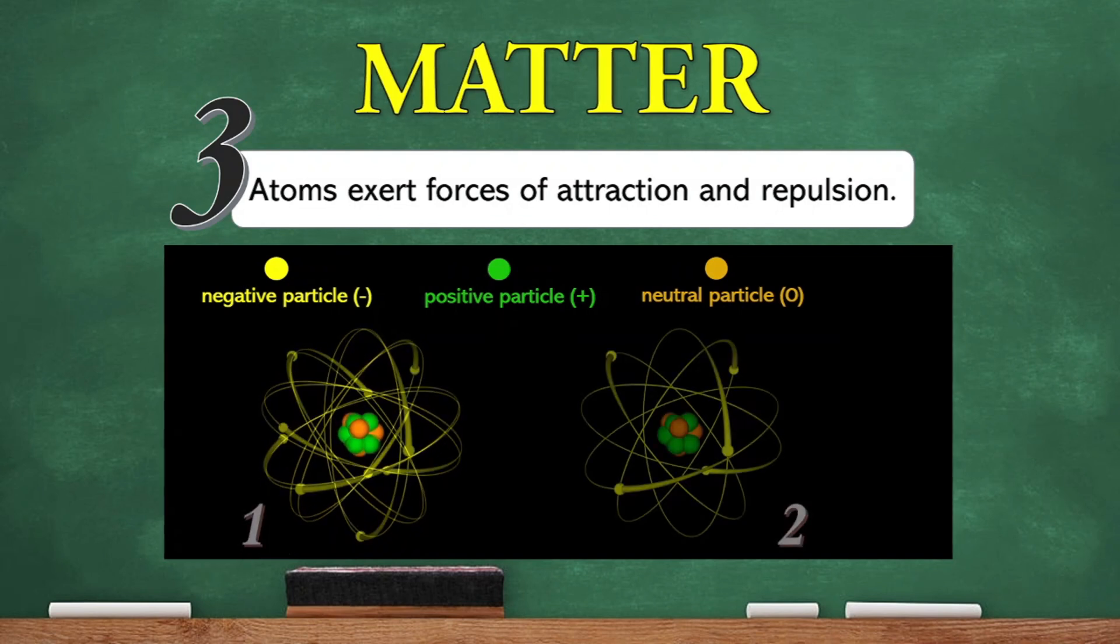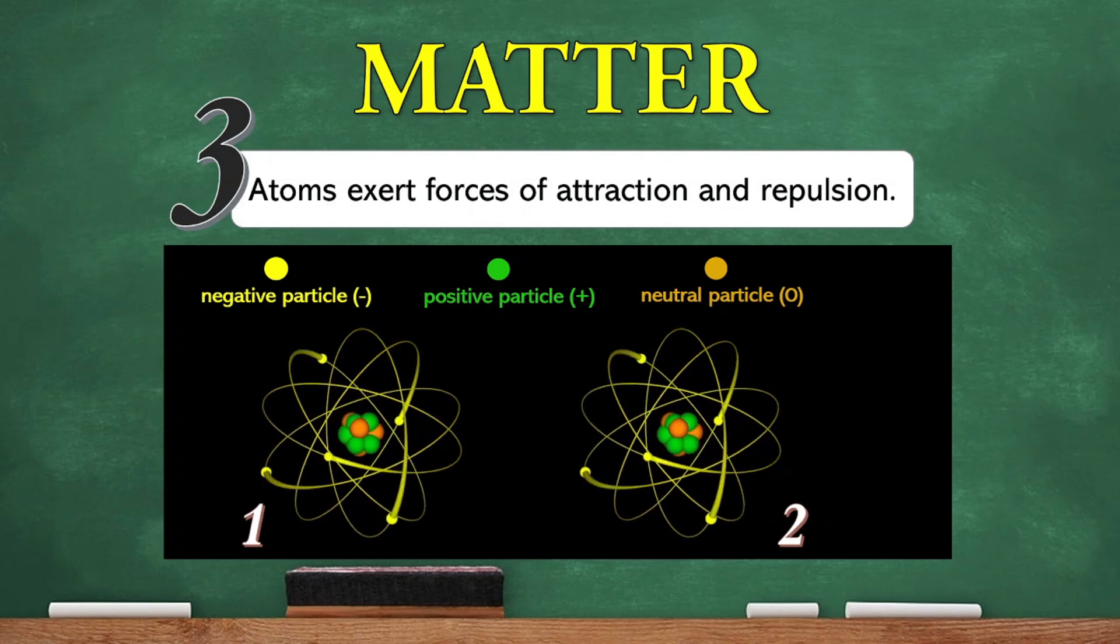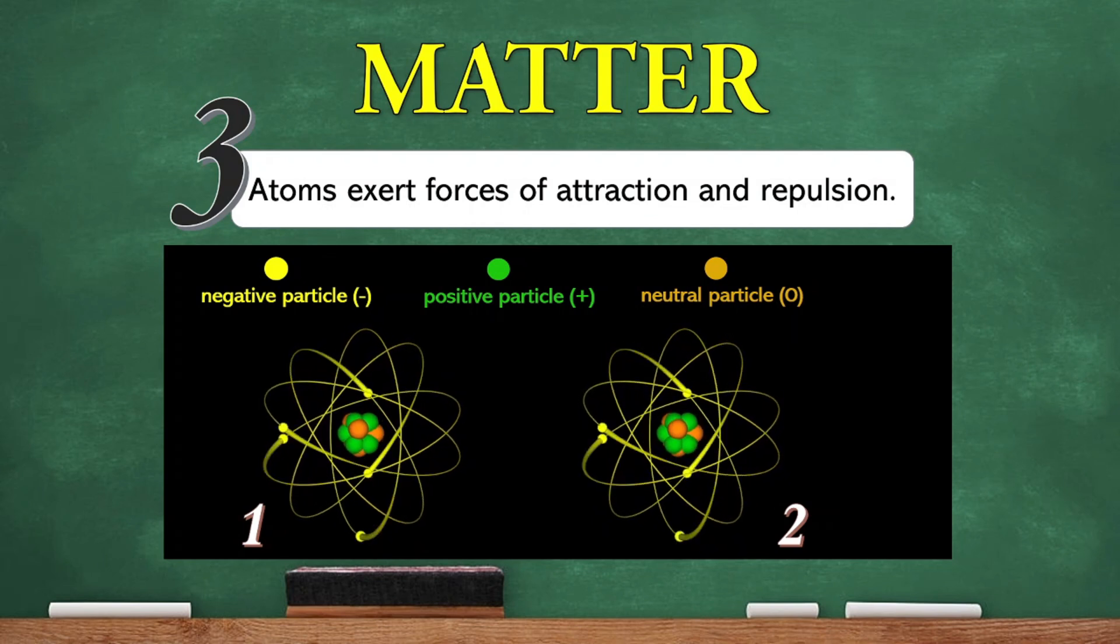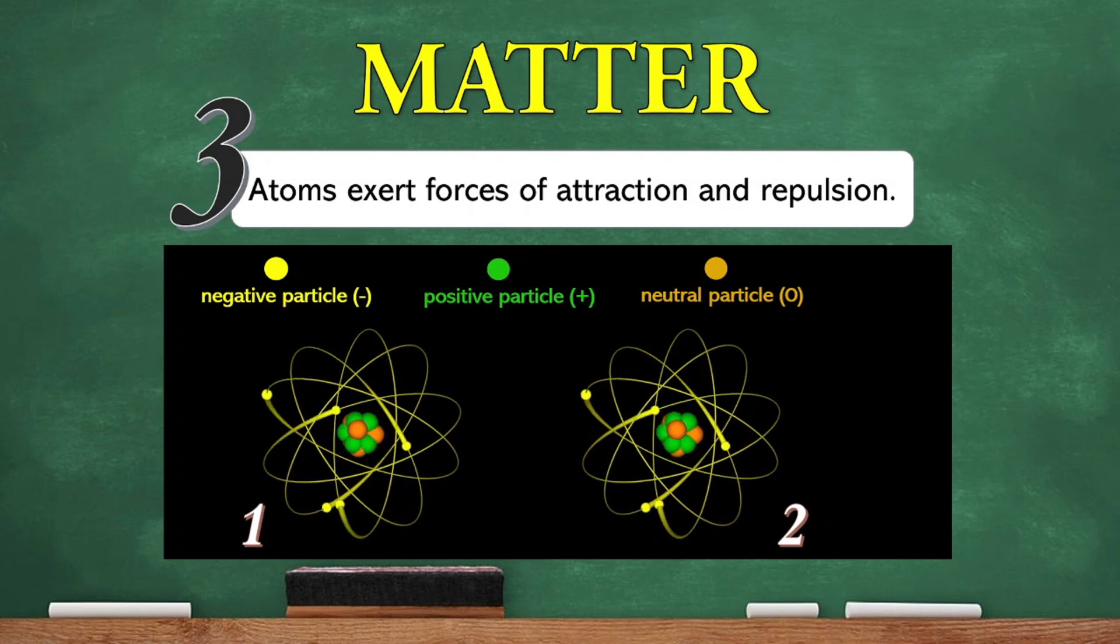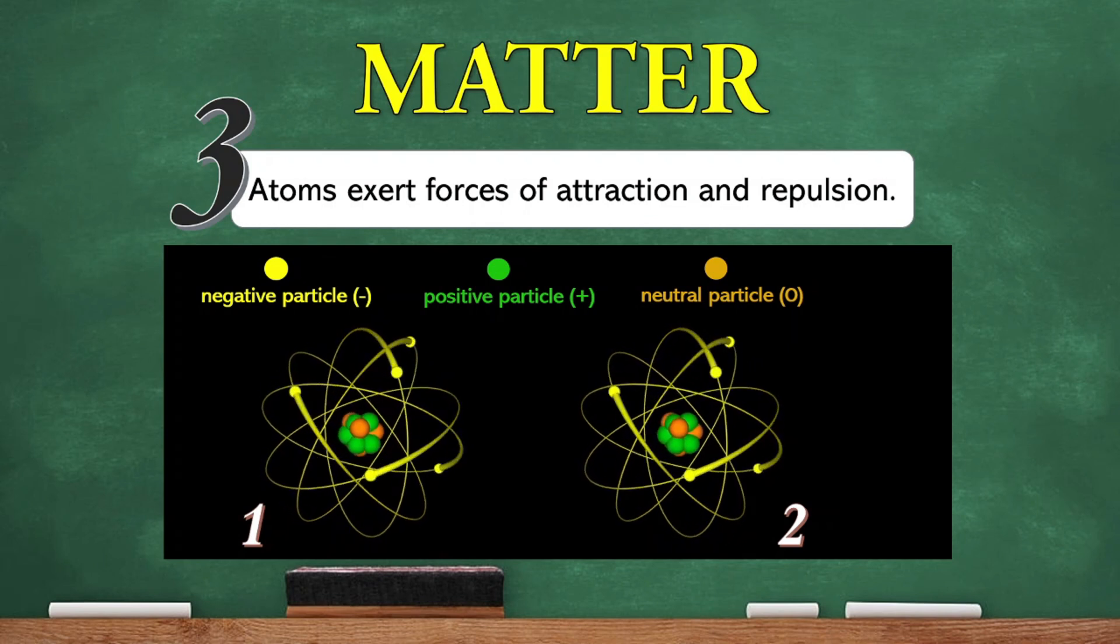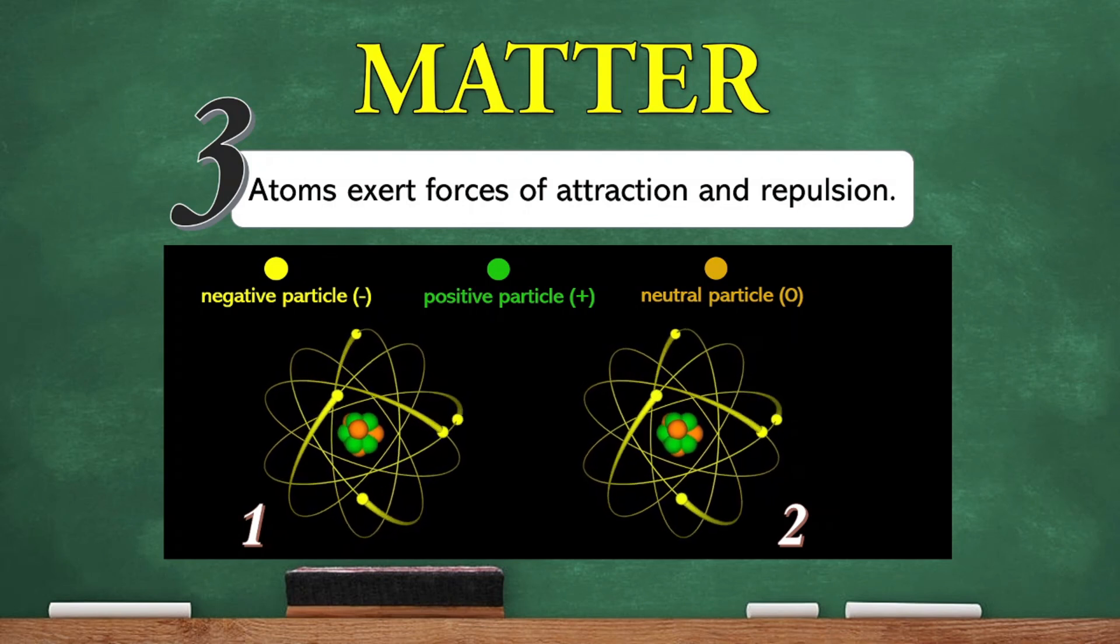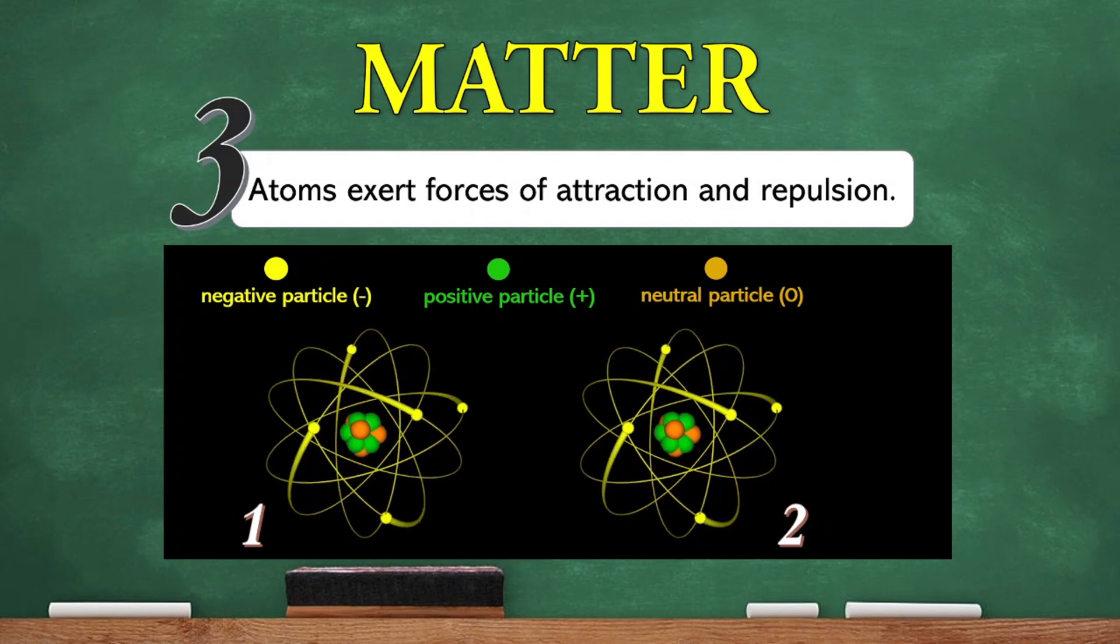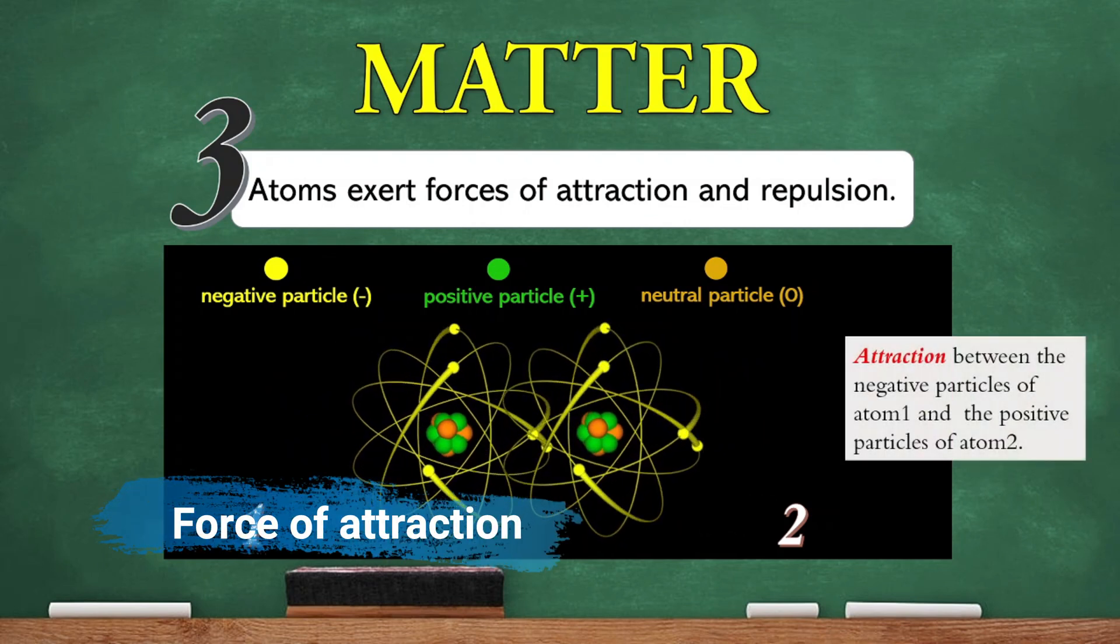What will happen if you have two atoms that are near to each other? When two atoms are near to each other, the positive particles in their respective nucleus are attracted to the negative particles of the opposing atoms. Since positive particles carry positive charges and negative particles carry negative charges, this causes the two atoms to get closer to one another, producing an attractive force.